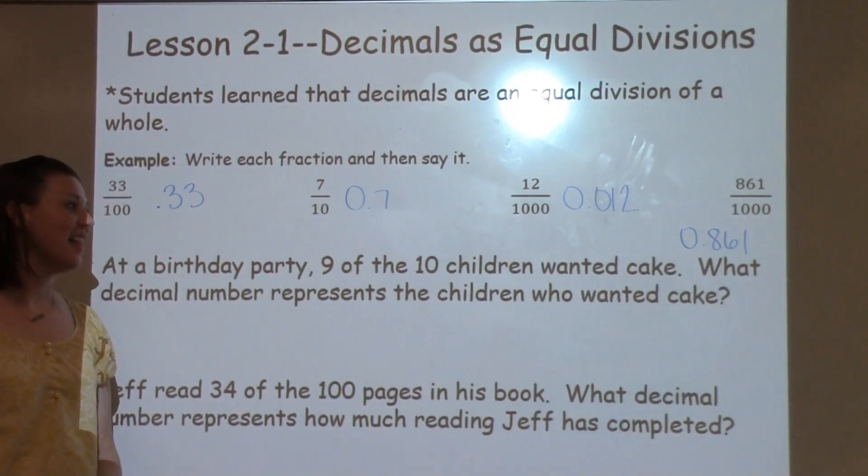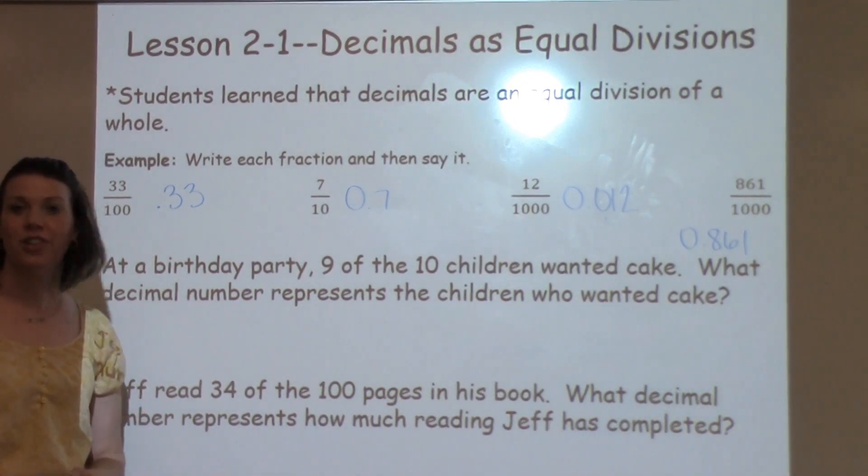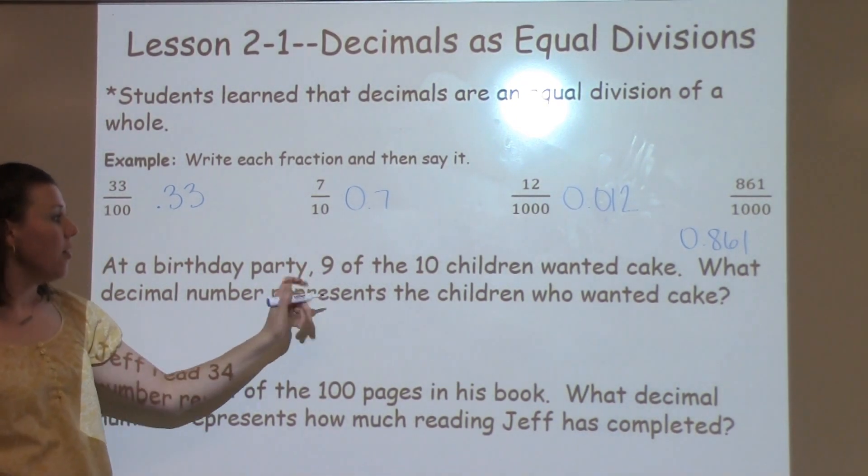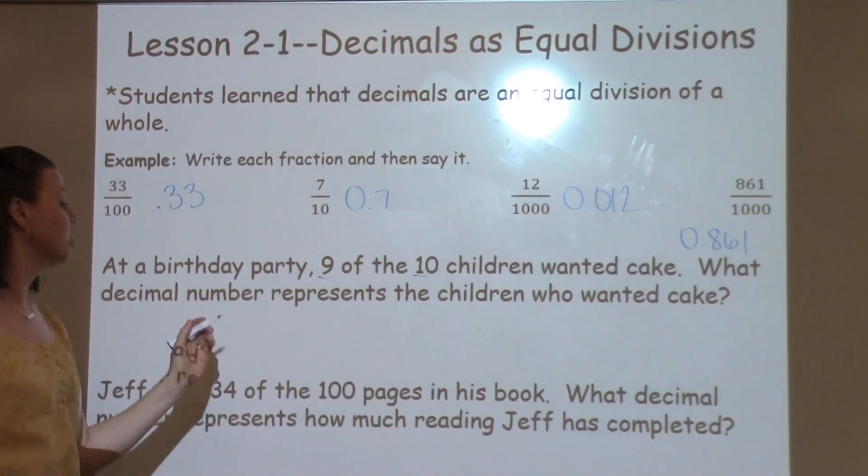At a birthday party, 9 out of the 10 children wanted cake. What decimal number represents the children who wanted cake? I know that I've got 9 out of the 10 children who want cake, so I'm going to write that as a fraction.